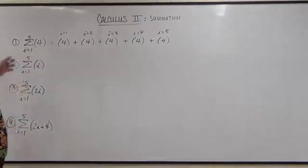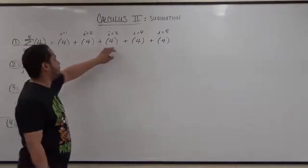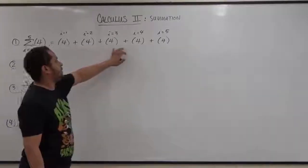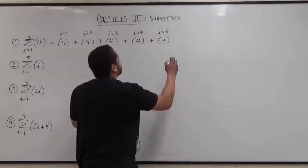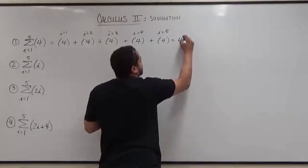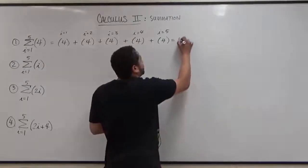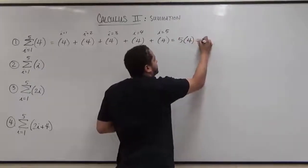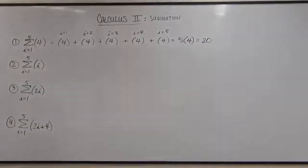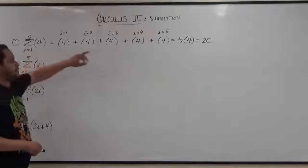Here we are just adding 4 five times from 1 to 5. We're going to add the 4s up, and this becomes 4 times 5 because we have five 4s. If we factor everything out, this is just five 4s, so we put a 5 outside, and this becomes 20. So the summation from 1 to 5 for the number 4 is just 20.